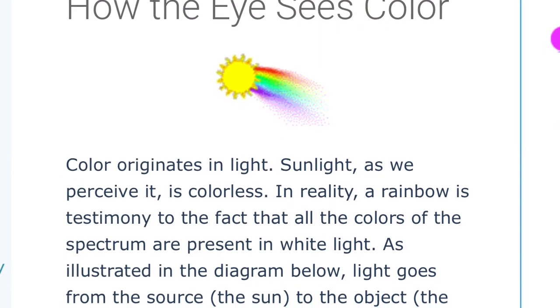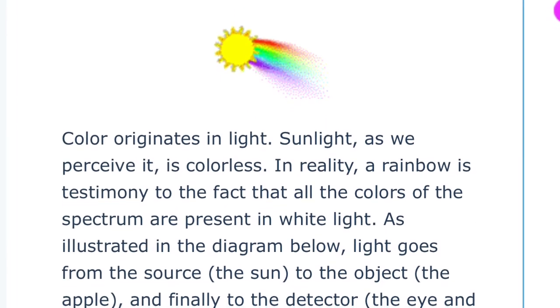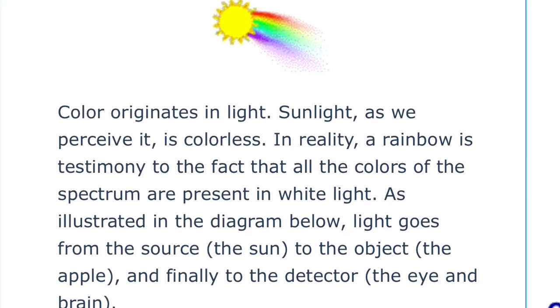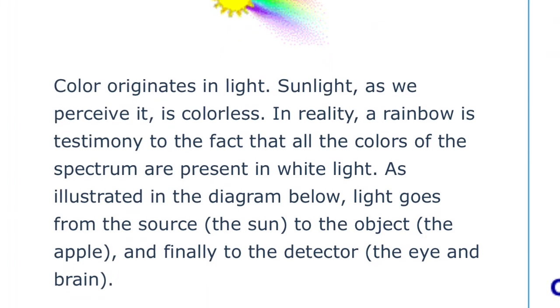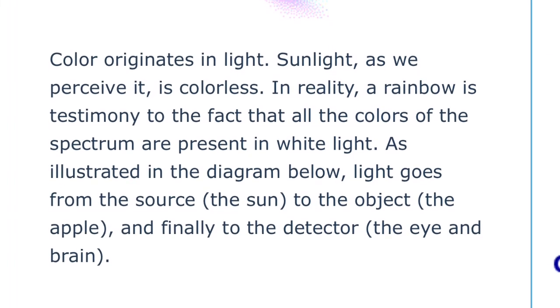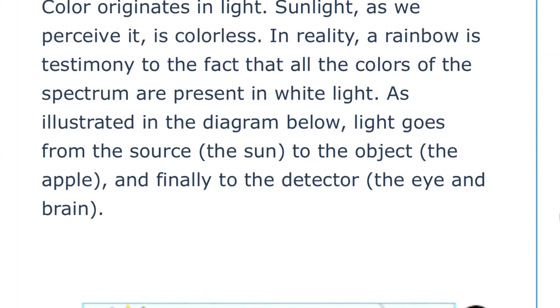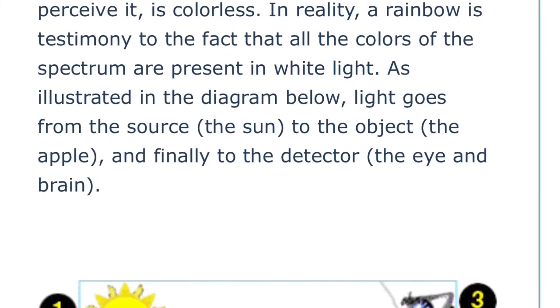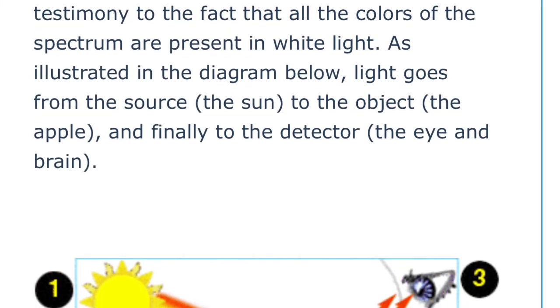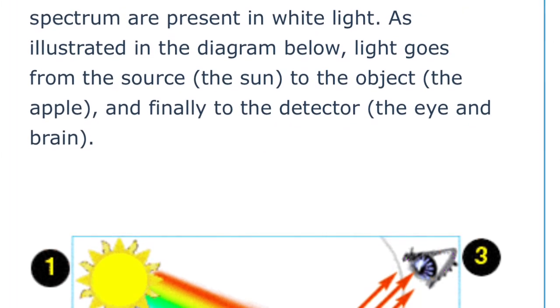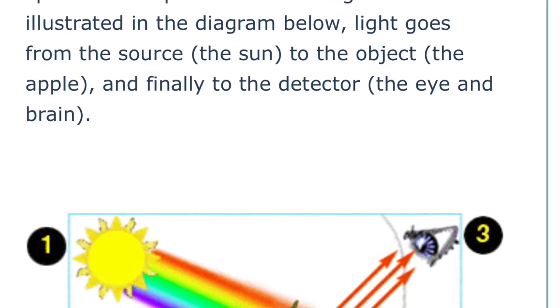I hope that you enjoyed learning all about the color wheel. Now we want to understand the science and the math behind the color. Color actually originates in light. So without sunlight, our eye could not see color. Even though you think sunlight might be colorless, it actually is showing all the spectrum of colors.